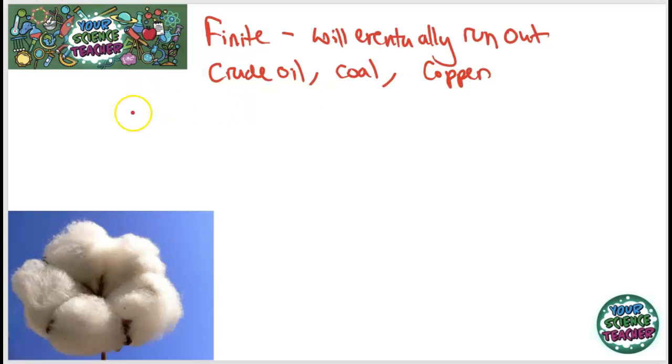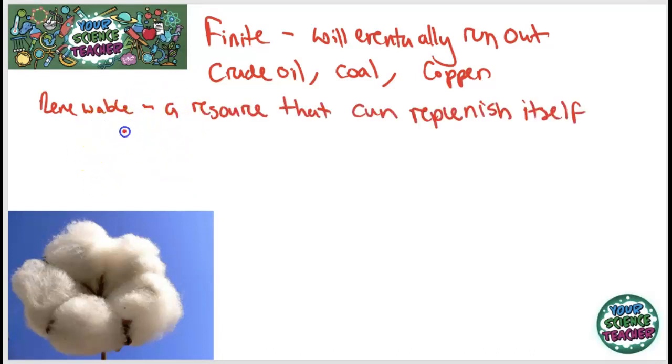Renewable resources on the other hand are resources that we can regrow or can replenish themselves, and examples can include wood and sheep's wool. There are a lot of naturally occurring resources that we can find that are renewable - examples include things like wool, silk, and even down here I have a cotton plant.